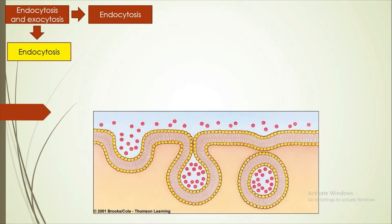Here is the visualization of exocytosis. The material is inside the vesicle. The vesicle will fuse with the plasma membrane, and then the excreted material will be expelled out.